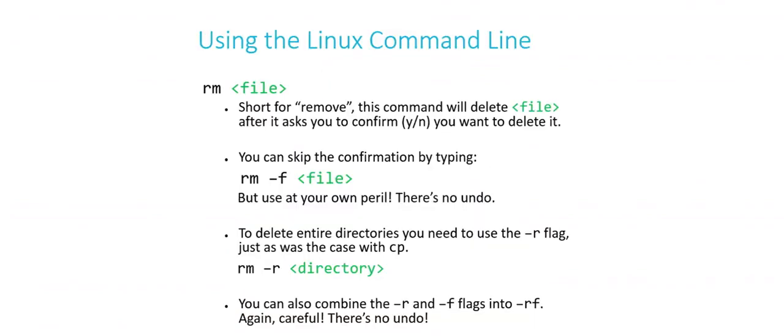I've copied a file by mistake and now I want to get rid of it. In a GUI you'd right-click and choose delete to send it to the recycle bin. But at the command line, we type rm for remove, then the name of the file. Now, rm is very careful — it does a lot of double-checking to make sure you actually want to delete the file, because there's no recycle bin here. Once we delete a file, it's gone with no way to recover it.